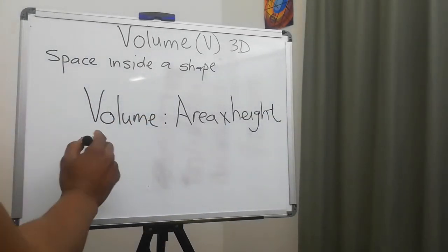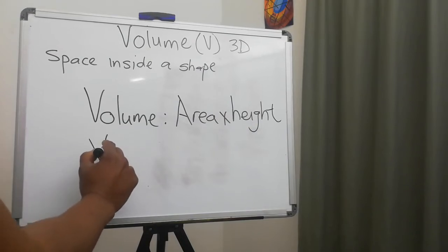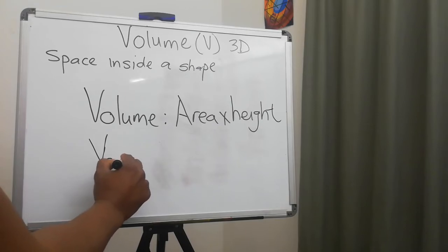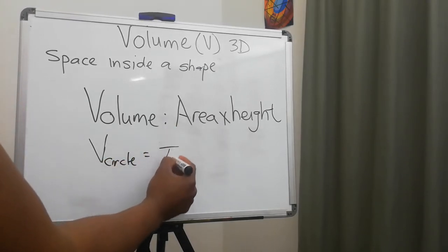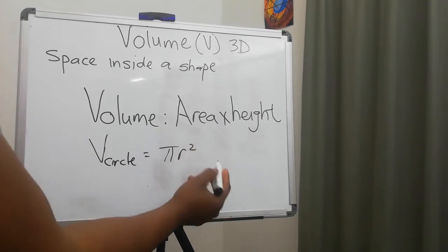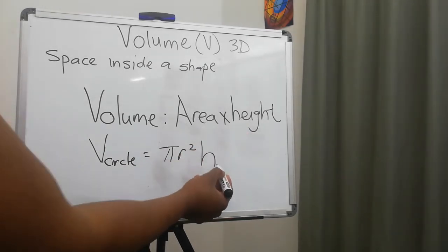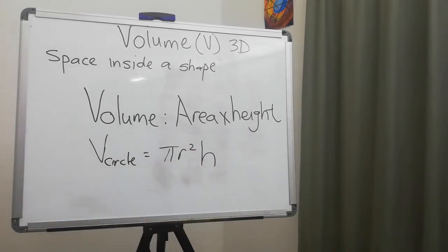So if we do the volume of a circle, then the area of a circle is πr², and then we just put in a height. This gives us a formula for the volume of a circle, and that is basically all you have to know.